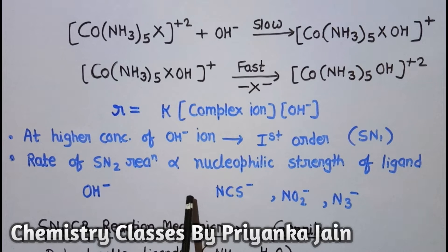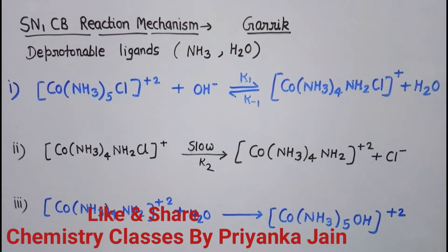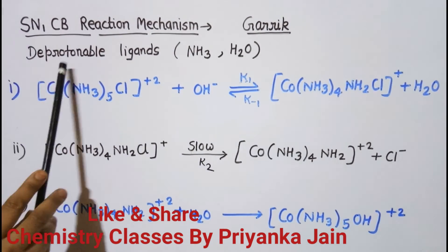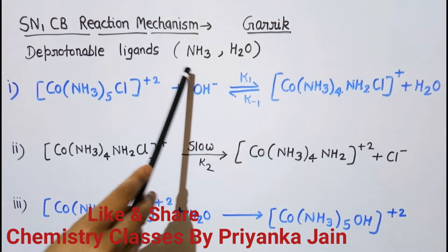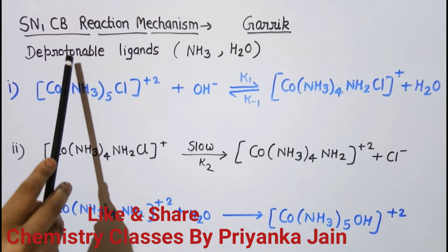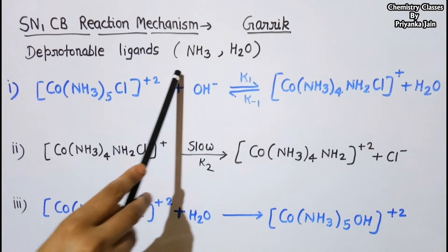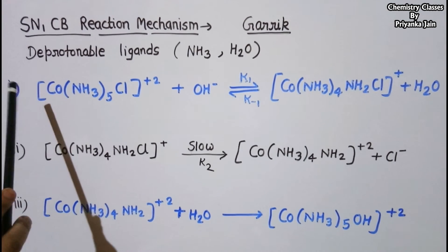This behavior cannot be explained by either SN2 or SN1 mechanisms. A different mechanism was proposed, known as the SN1CB reaction mechanism, first proposed by Garrick. This mechanism operates when deprotonable ligands such as NH₃ or H₂O are present in the metal complex. A deprotonable ligand is one that can easily lose a proton that can be abstracted by a base. The reaction proceeds in three different steps, the first being abstraction of a proton from one of the ligands.